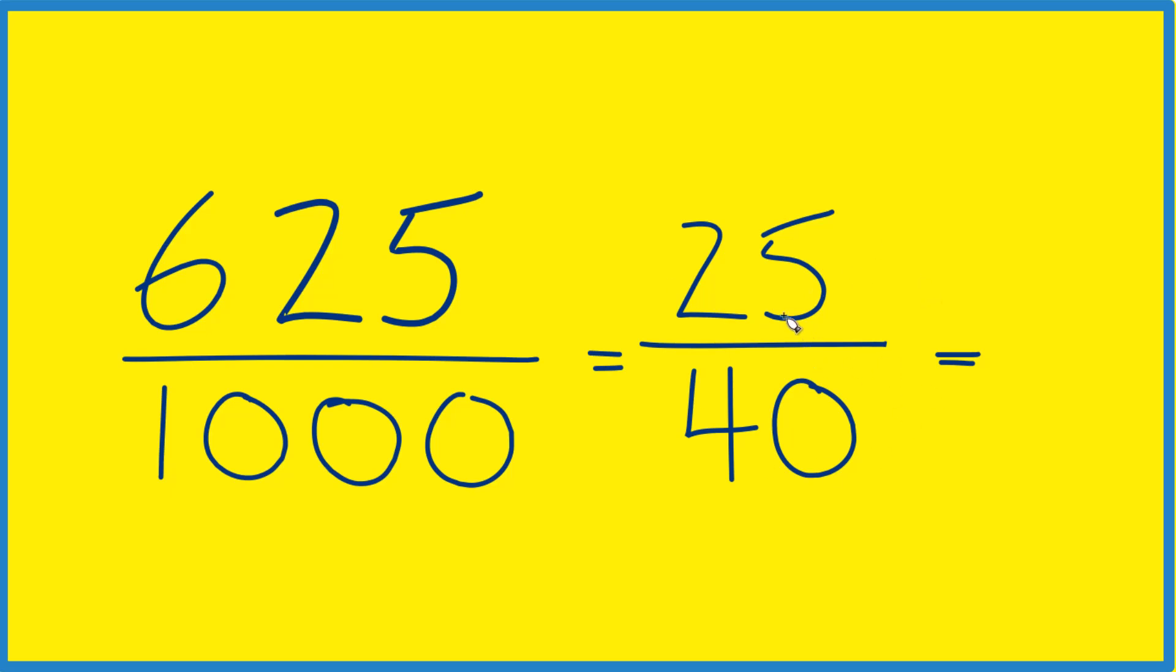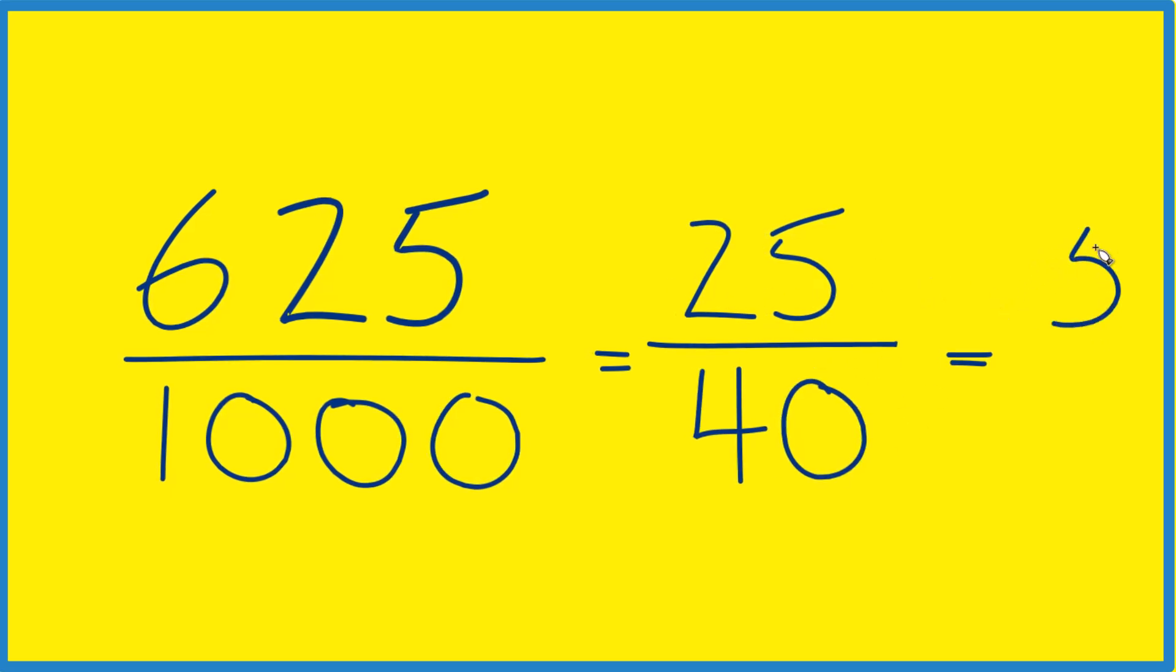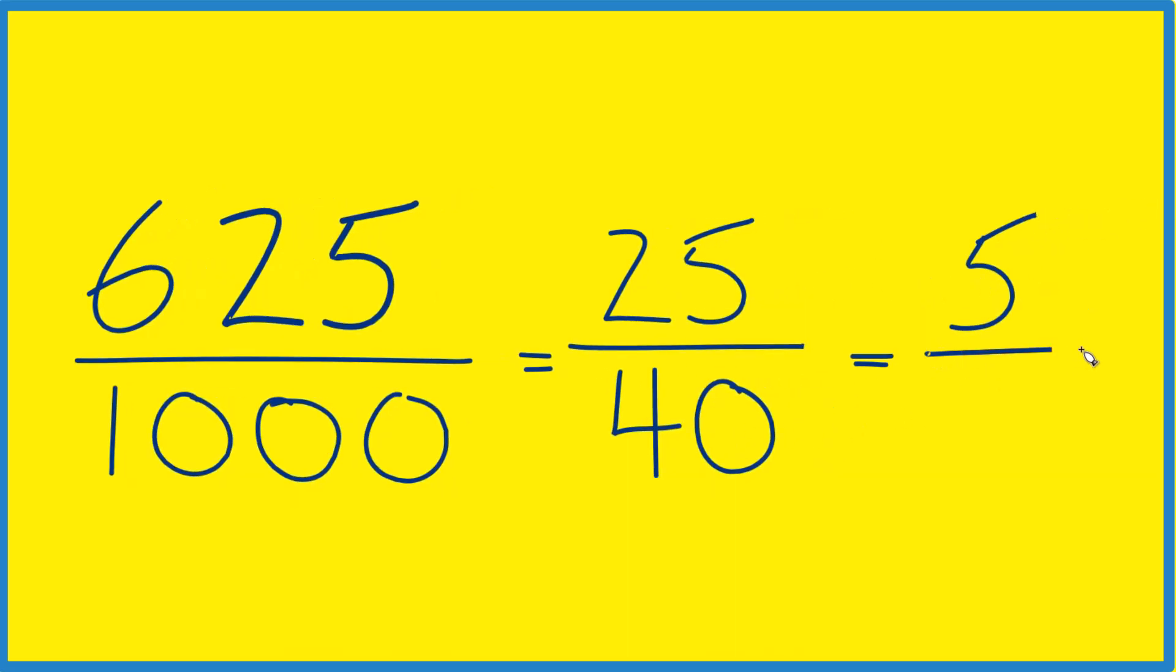Now let's divide by 5. 25 divided by 5 is 5. 40 divided by 5 is 8. And there's that five-eighths. So that's another way to do it as well. Either way, 0.625 in decimal is five-eighths of an inch. That's it. This is Dr. B. Thanks for watching.